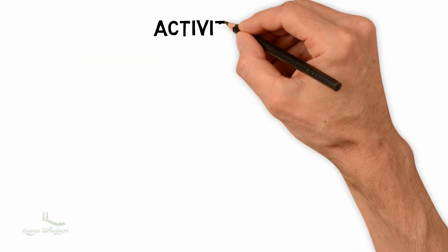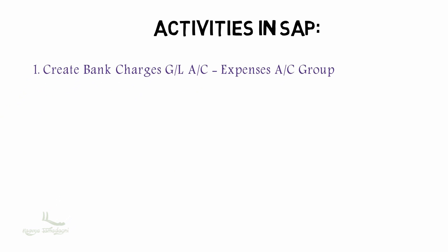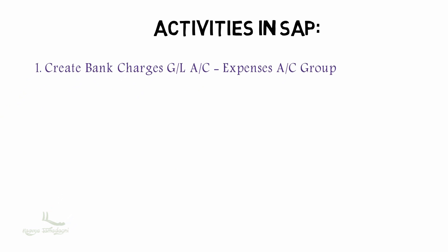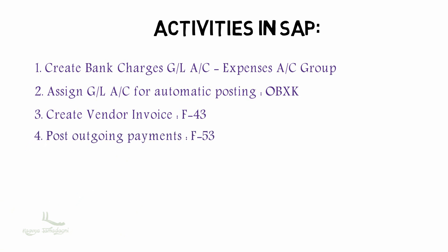Now let's perform the SAP configuration for the accounts payable process, followed by accounts receivable activities. Here is an overview: first, we will create the bank charges GL account under the expenses account group using T-code FS00. Then we will assign the GL account for automatic posting using T-code OBXK. Next, we generate the vendor invoice using T-code F-43, post the outgoing payments along with bank charges using T-code F-53, and finally verify the journal entries in FBL3N report.